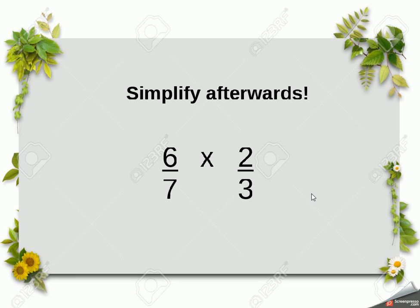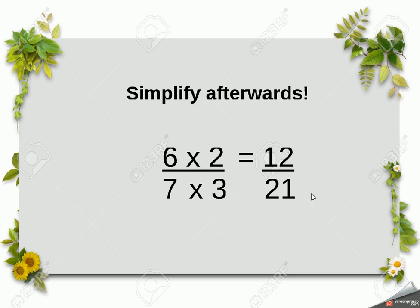However, you've always got to remember to simplify afterwards. If you've forgotten how to simplify or didn't watch the last video, make sure you do. So in this case, we've got 6/7 times 2/3. Same as before, we multiply the tops to give us 12, and we multiply the bottoms to give us 21. 12 over 21, 12/21.